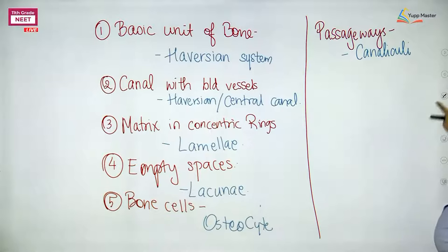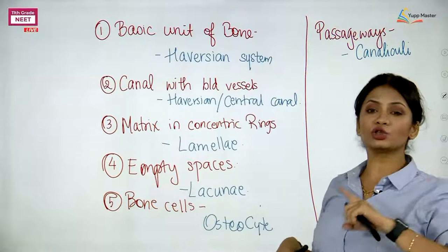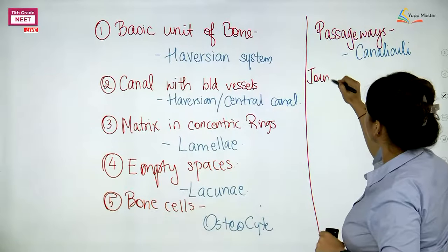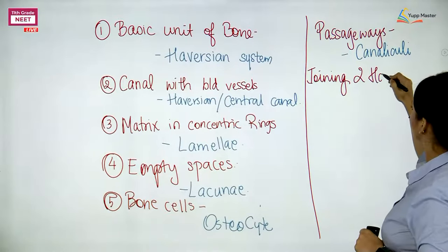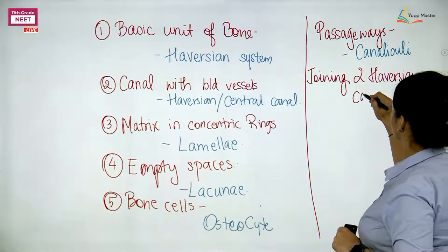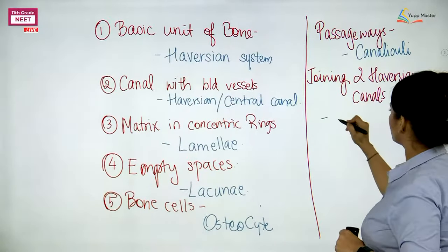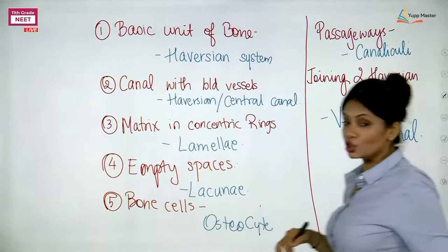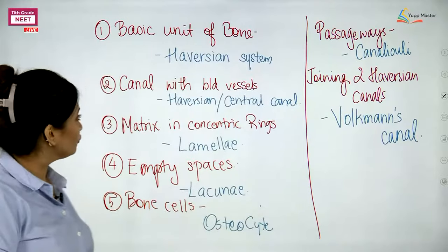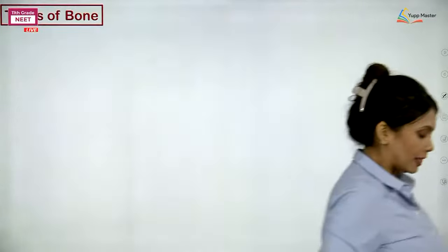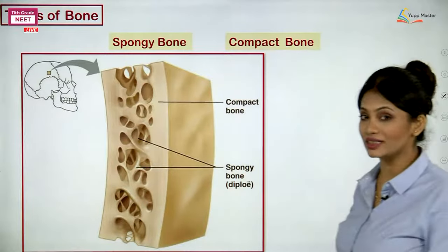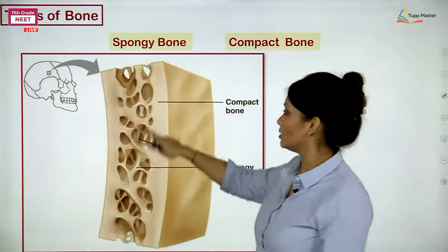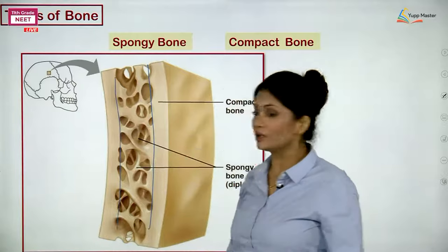Spongy bone is filled with red bone marrow, whose function is hemopoiesis — the formation of blood cells (RBCs, WBCs, and platelets). Heme means blood and poiesis means formation. Compact bone is filled with yellow bone marrow, which stores fat.